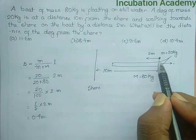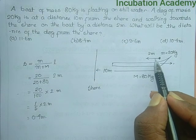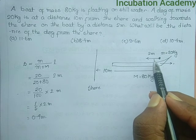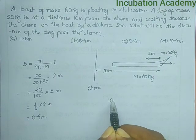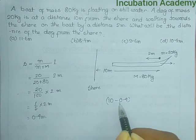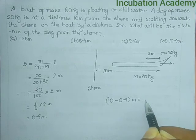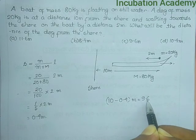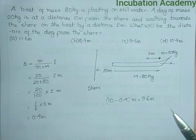Since the dog is moving by 0.4 meters towards the shore, now the dog is at a distance 10 minus 0.4 meters, that is 9.6 meters from the shore.